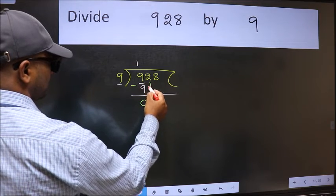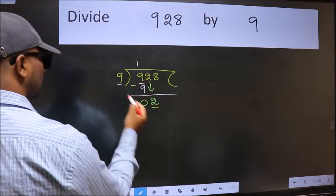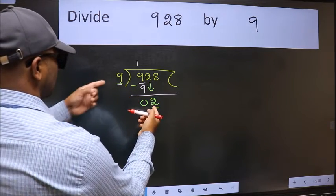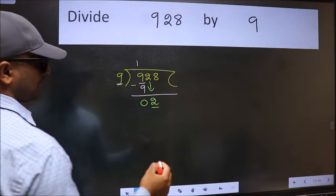After this, bring down the next number, 2. Now here we have 2 and here 9. 2 is smaller than 9, so we should bring down the second number.